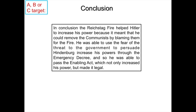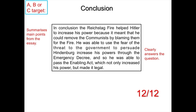The conclusion reads: in conclusion, the Reichstag fire helped Hitler to increase his power because it meant he could remove the communists by blaming them for the fire. He was able to use the fear of threat to the government to persuade Hindenburg to increase his powers through the emergency decree, and so he was able to pass the Enabling Act, which not only increased his power but made it legal. Three clear PEA paragraphs linked together with a decent conclusion that clearly answers the question is a 12 out of 12 mark answer. Look at your own answer — did you give a clear conclusion, and do you have three PEA paragraphs with accurate knowledge? If not, set yourself a target to improve in the exam.